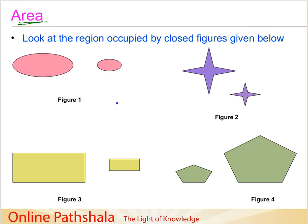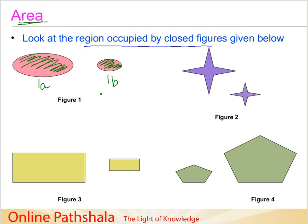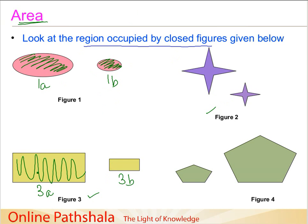If you have a look at the examples shown here, it will be clearer. We can look at the region occupied by closed figures — I've colored them. In figure 1, which is an oval shape, figure 1b occupies less region compared to figure 1a. Similar is the case for figure 2. For figure 3 we have rectangles: figure 3a occupies more region than figure 3b. Similarly is the case for figure 4.